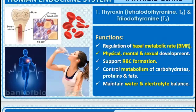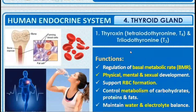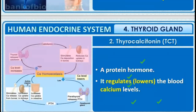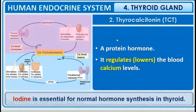Functions of thyroxin include regulation of basal metabolic rate, supporting RBC formation, controlling metabolism of carbohydrates, proteins and fats, and maintaining water and electrolyte balance in the body. Thyrocalcitonin is a protein hormone that lowers the blood calcium level — when this hormone is secreted, calcium is reduced in the blood. Iodine is essential for normal hormone synthesis in the thyroid gland.